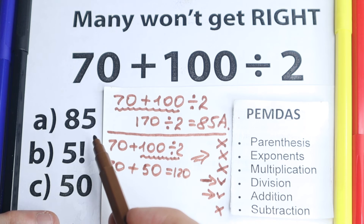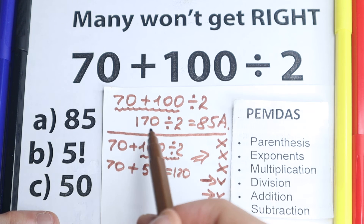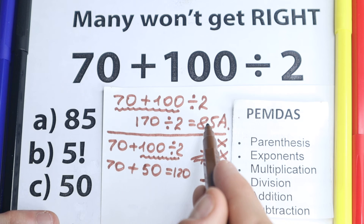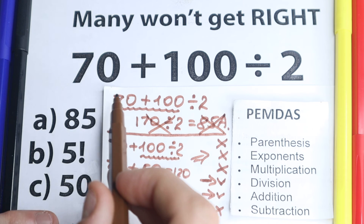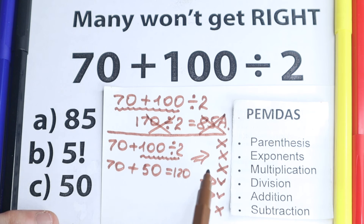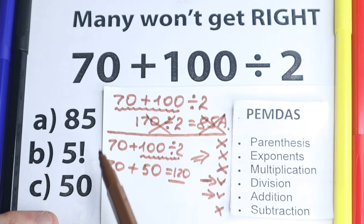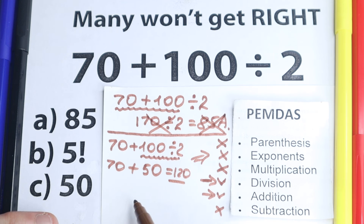But here is a really important moment — if you look at the test, we don't have the option 120 listed. So many students go back to the obvious-looking but wrong solution of adding first then dividing to get 85. That is absolutely wrong. According to PEMDAS, BODMAS, or any order of operations, division is always before addition. You must divide first, then add or subtract.